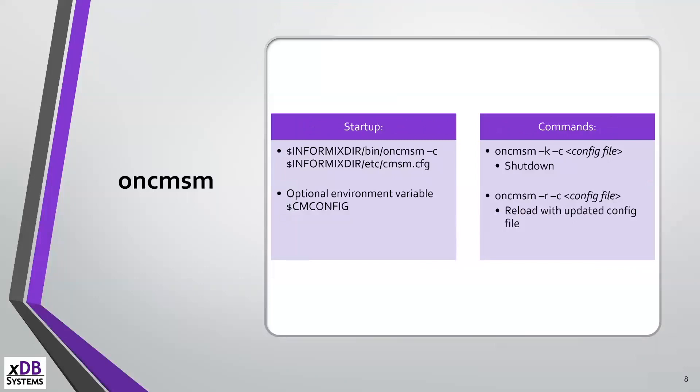For the onCMSM binary: you pass it -c to your config file, or if you have the environment variable CMCONFIG pointing to the config file, you don't need the -c flag. Running it without any arguments starts the service. Using -k stops it, and -r reloads it. It's fairly straightforward.